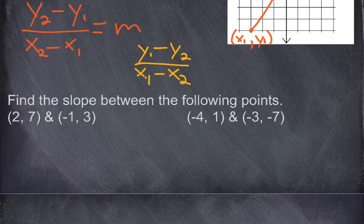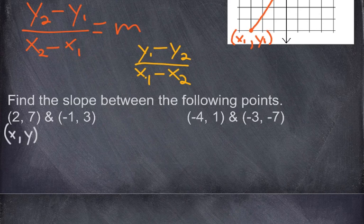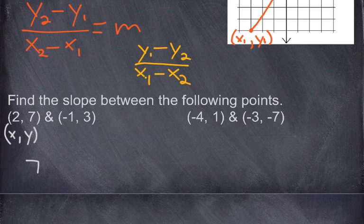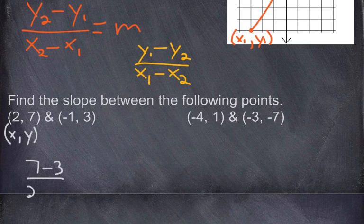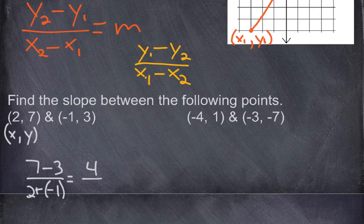Let's find the slope between the points (2, 7) and (-1, 3). We pick y value 7, subtract the other y value 3, over the x value 2 since we started with 7 on top, minus the other x value negative 1. 7 minus 3 is 4, and 2 minus negative 1 — don't forget that becomes a plus — gives us 3. So our slope here is 4 thirds.